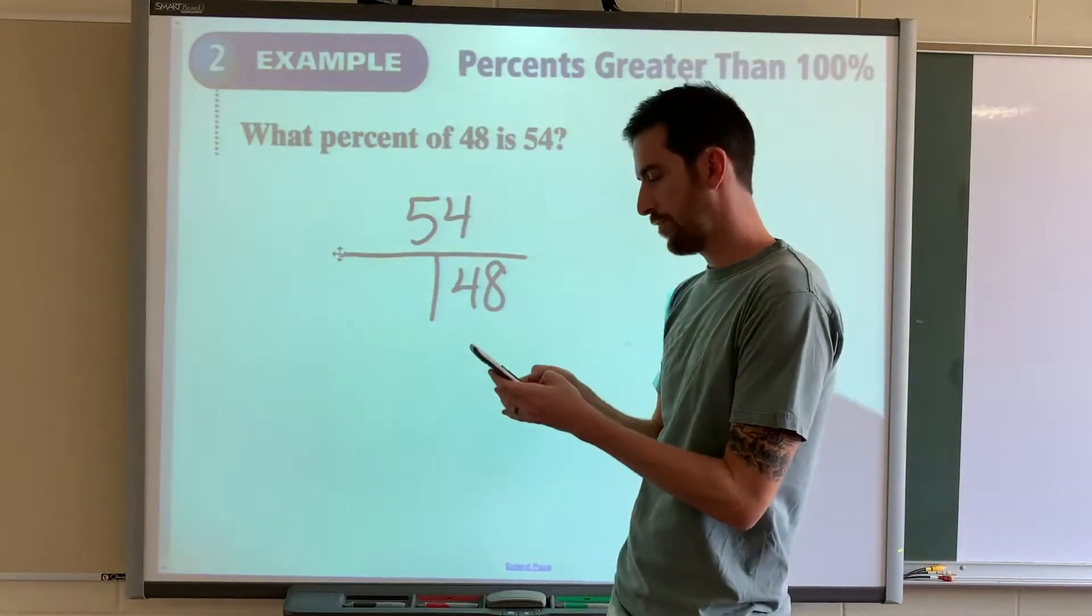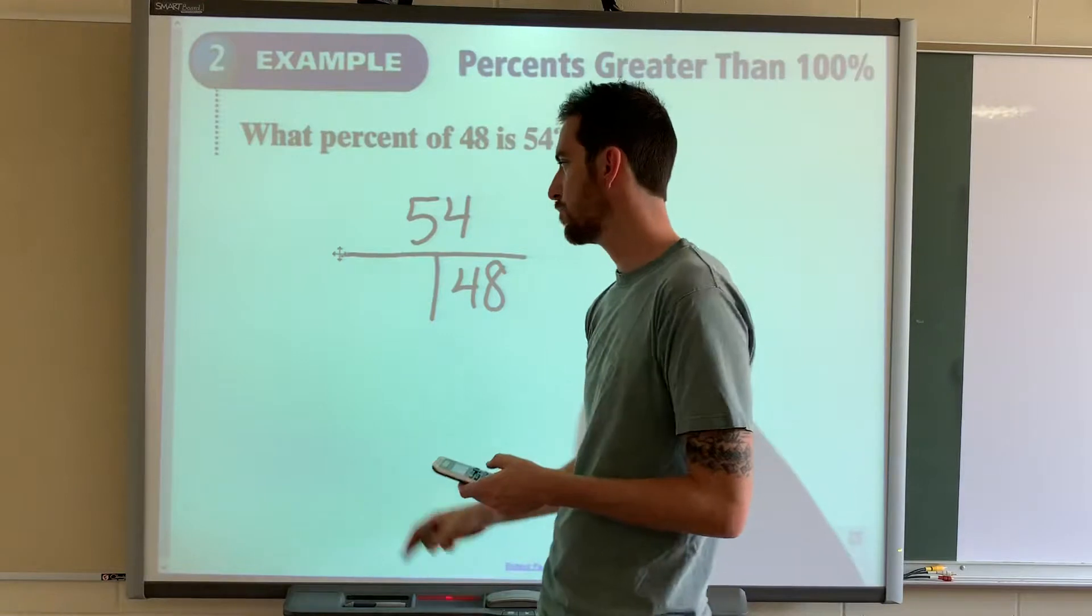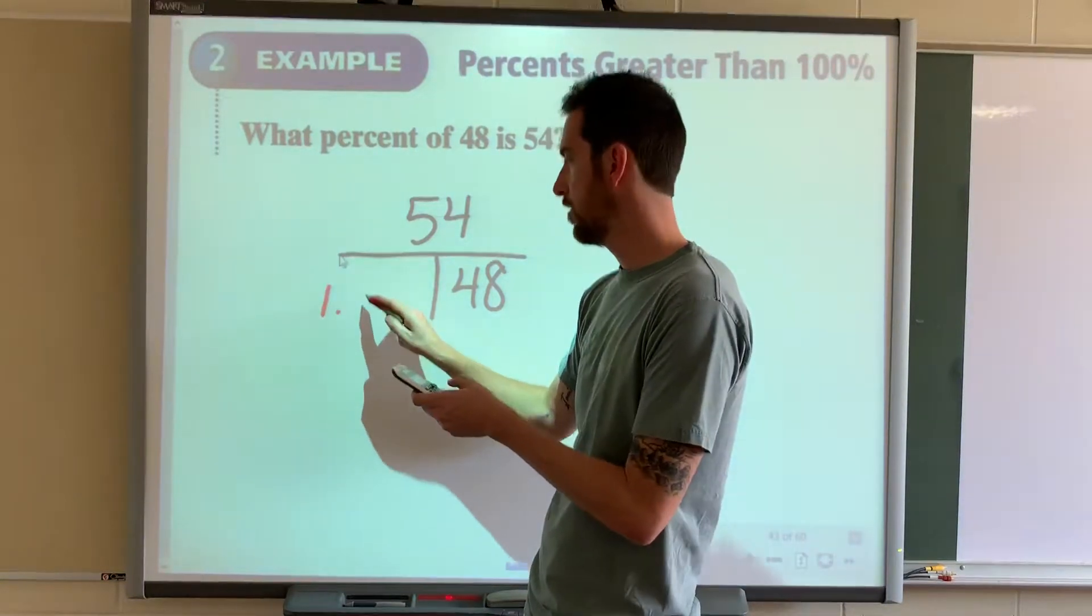So we divide them. 54 divided by 48 and we get the decimal 1.125.